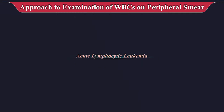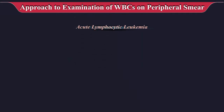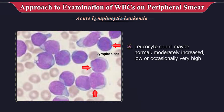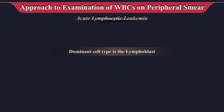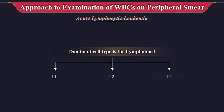In acute lymphocytic leukemia, the leukocyte count may be normal, moderately increased, low, or occasionally very high. It is usually associated with anemia and thrombocytopenia. The dominant cell type is the lymphoblast, which may be of L1, L2, or L3 type, described later.